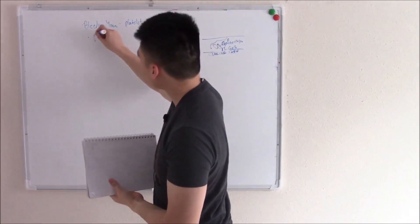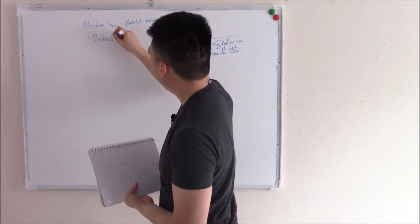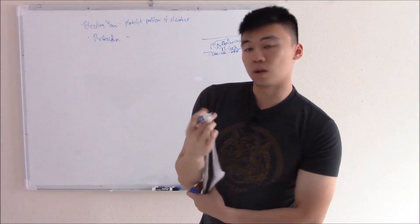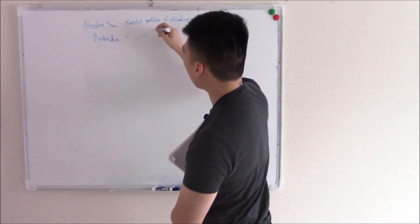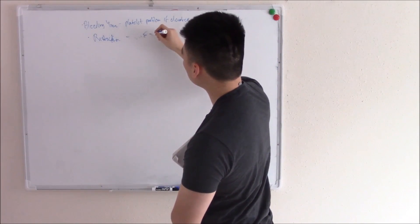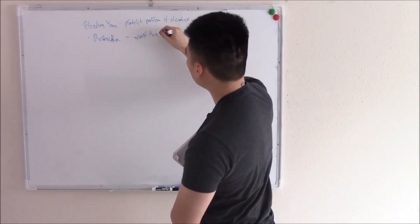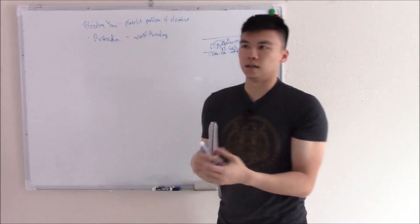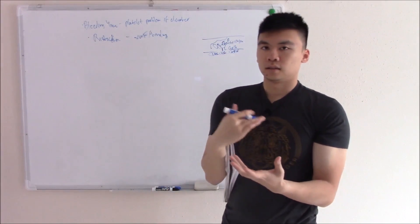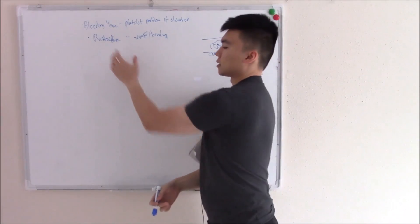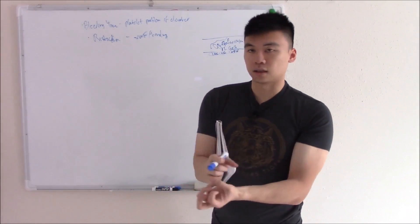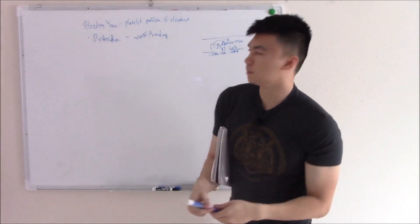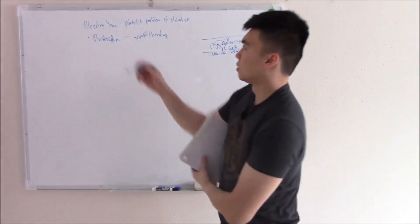Another test we can do is Ristocetin. And Ristocetin tests for von Willebrand factor and things that bind to von Willebrand factor. So von Willebrand factor and the ability of it to bind. And Ristocetin is just an old antibacterial that we don't use anymore. We just use it for this test. And it'll cause platelets to clump if the von Willebrand factor is normal or the things that bind to von Willebrand factor are normal. So those are your tests for platelets.